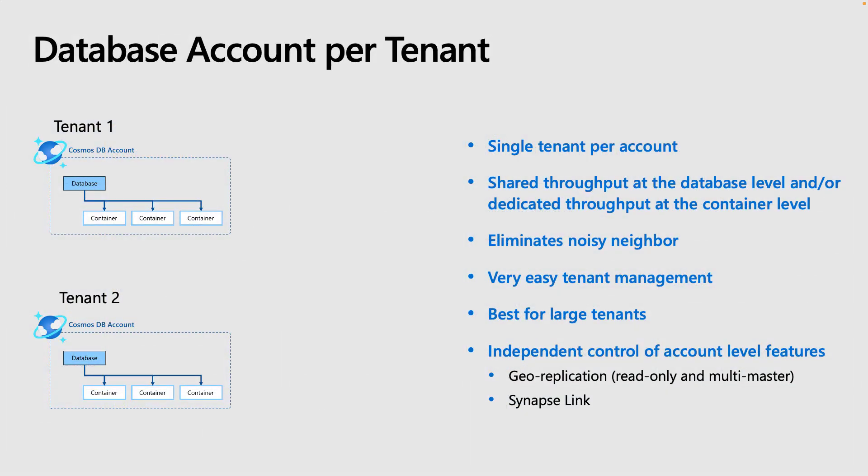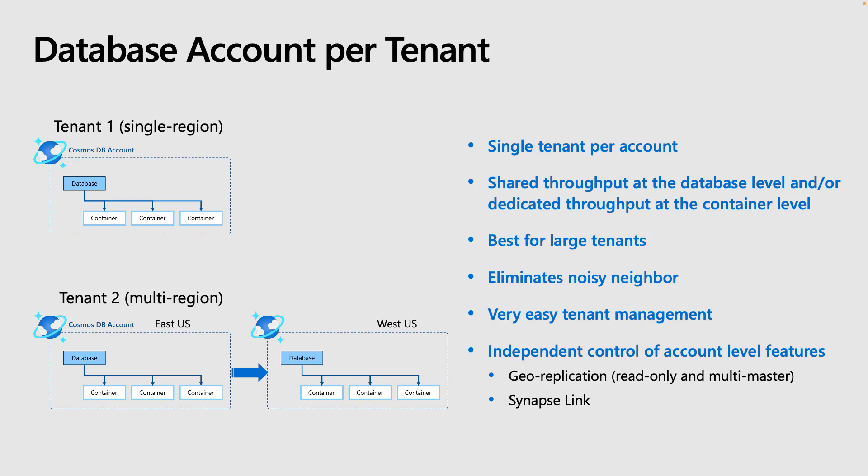The first option is to give each customer their own Cosmos DB account. This gives you maximum flexibility to provision throughput — allowing shared throughput at the database level, dedicated throughput at the container level, or both. You won't need to worry about noisy neighbor issues or tenant isolation. Tenant management is very easy — to drop a tenant, you can just remove the entire account. The billing is also easy to track, as the Cosmos DB account will be a line item on your bill. This model is good for very large tenants or situations where you need independent control of account-level features such as geo-replication and Synapse Link. For example, if tenant 2 requires geo-redundancy but tenant 1 does not, you can provision accordingly without incurring unnecessary cost for other tenants.